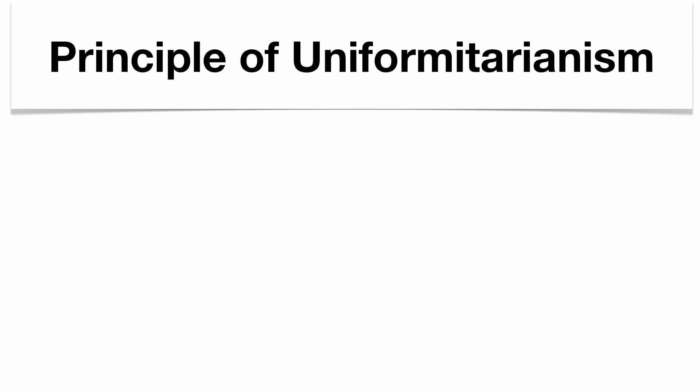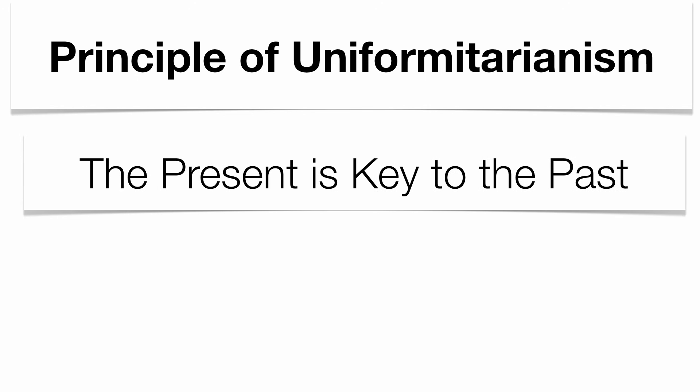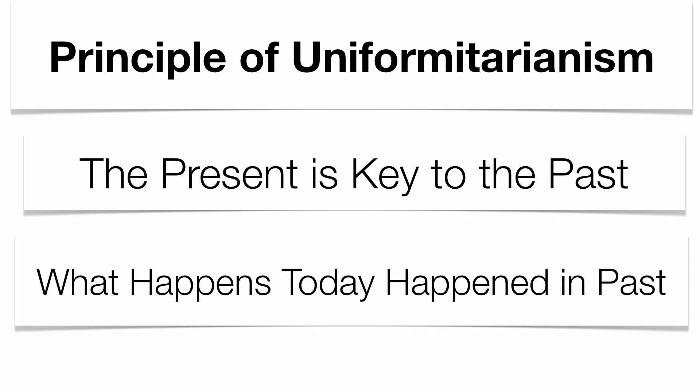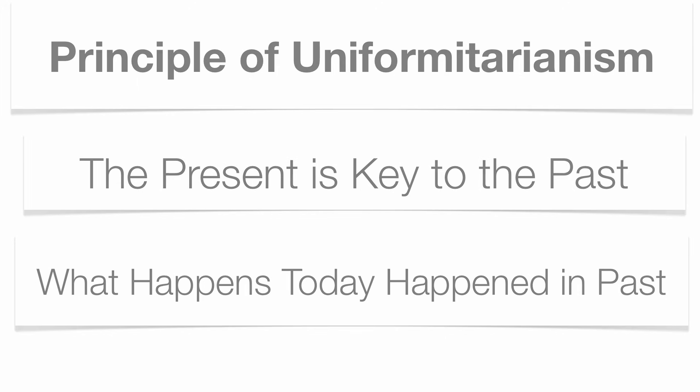There are a number of principles that help us understand the sequence of events. The first is the principle of uniformitarianism, which basically states that the present is the key to the past. The processes going on today — like volcanic eruptions, weathering and erosion, and plate tectonics — also happened in the past, giving us a window into how the Earth was shaped millions of years ago.